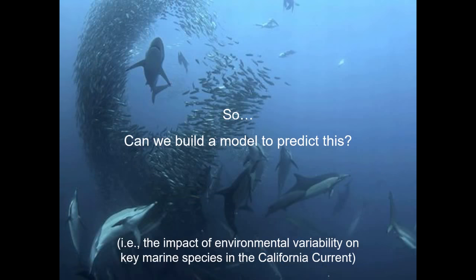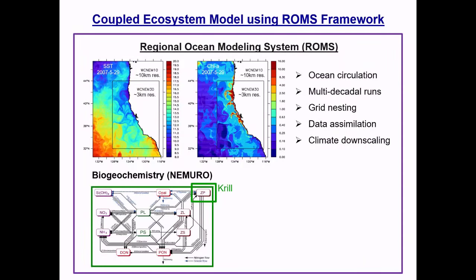So the big question is: can we build a model that can predict this? Can we understand the spatial and temporal scales at which trophic levels aggregate to form ecosystem hotspots in the California Current? Well, we can certainly try.